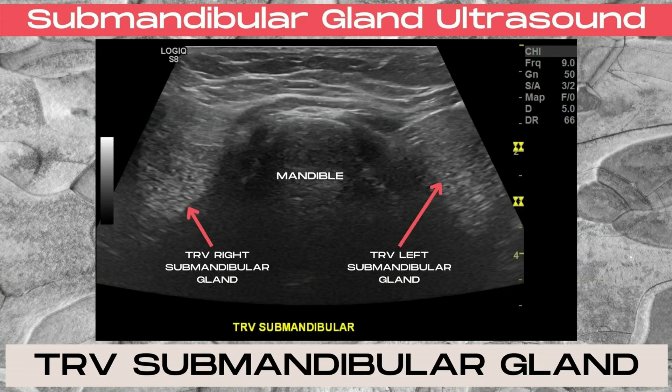To locate the submandibular glands on ultrasound, place the transducer below the chin in a transverse plane. From this view, you can see the chin or the mandible in the middle of the image as the dark hypoechoic area, and on the lateral sides of the mandible will be the transverse right and left submandibular glands, which are going to be hyperechoic and homogenous. To view each gland separately, slide laterally in a transverse plane from the chin bone and the gland will be visualized.